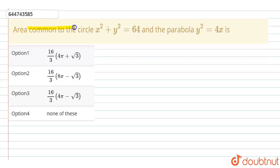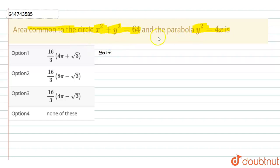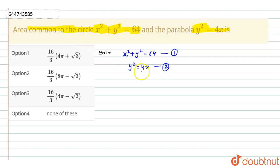The question is: find the area common to the circle x² + y² = 64 and the parabola y² = 4x. We have to find the area common to the circle and the parabola. We are given circle x² + y² = 64 as equation 1, and y² = 4x as equation 2. Equation 2 denotes the parabola and equation 1 denotes the circle.